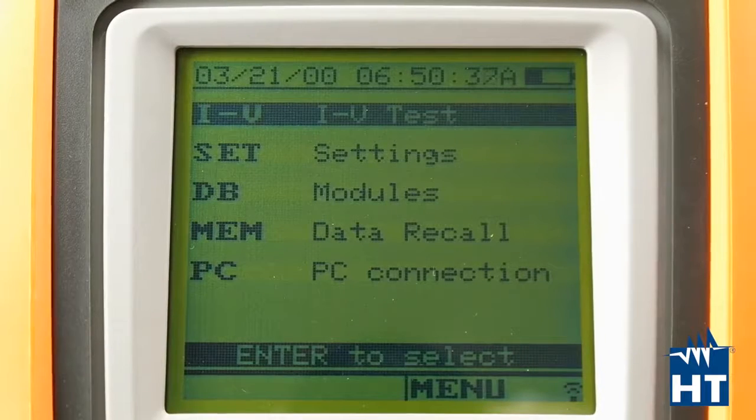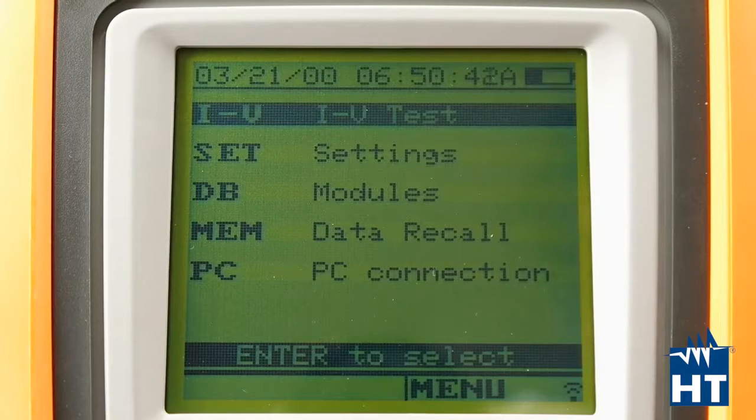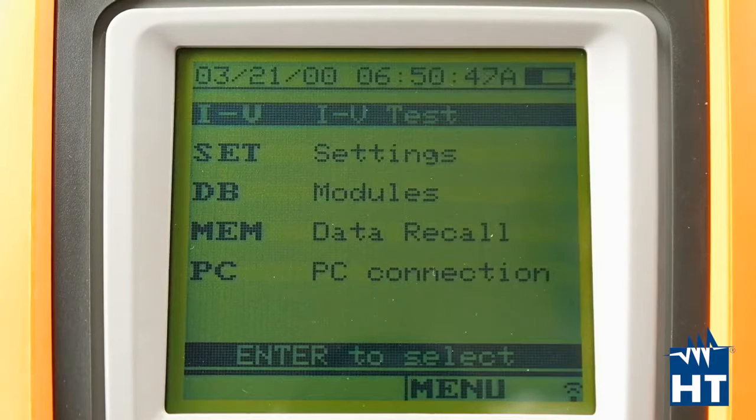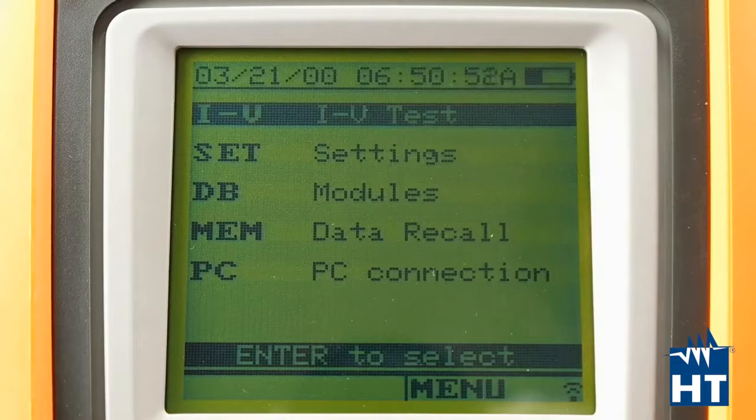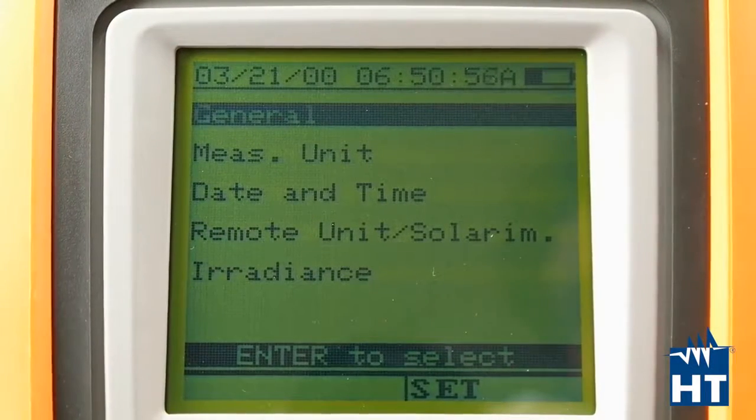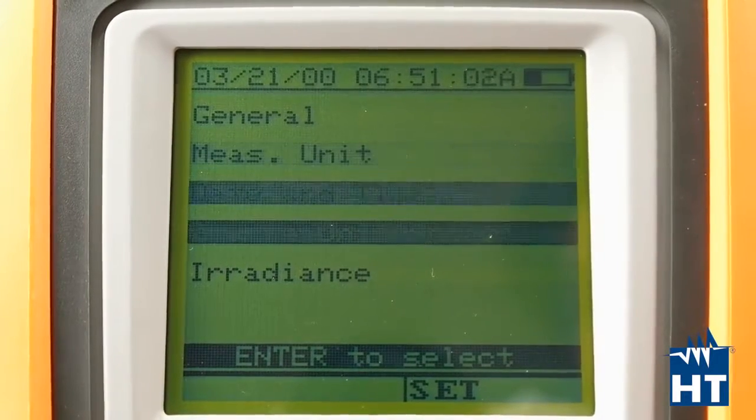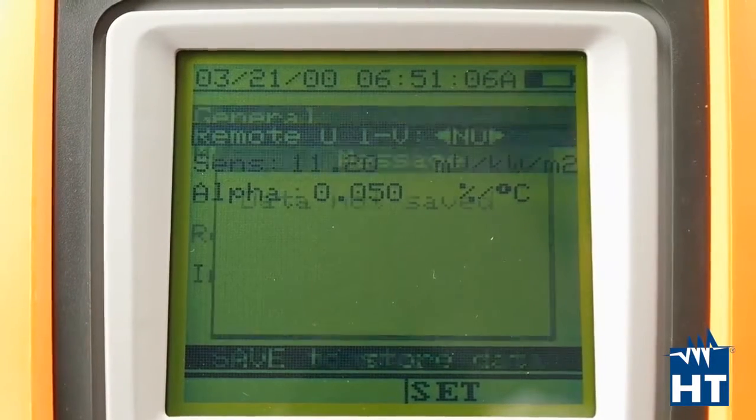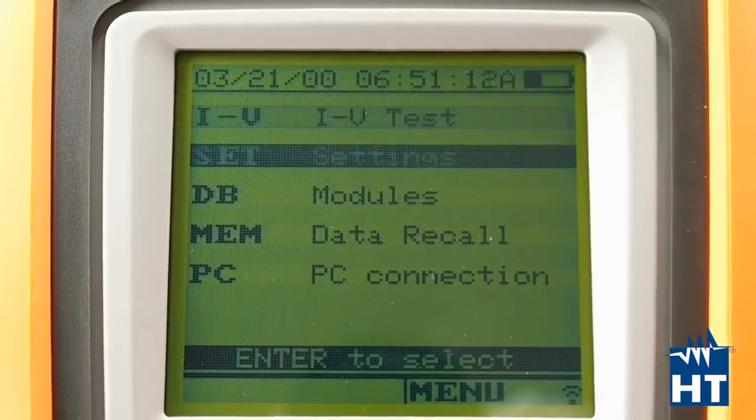Now I'm going to show you how the user interface of this IV400W is structured. As you can see here we have a really simple menu where you can find the principal functions that you need to do measurements. Before doing the measures you can set whatever you need like measurement units, date and time, remote unit. Then you can find the database of the modules, for example, here.